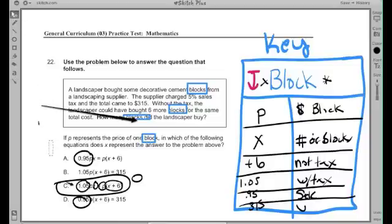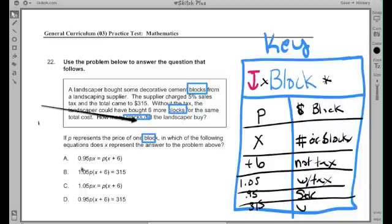So I could eliminate that detail. Once I do my analysis and determine that the 0.95 represents a sale and I don't see a sale in my problem, that means these ones here could be crossed off.